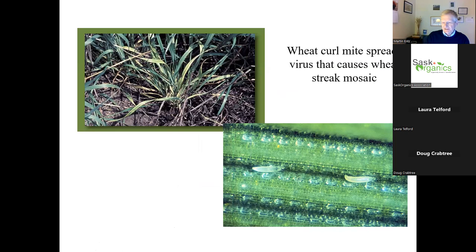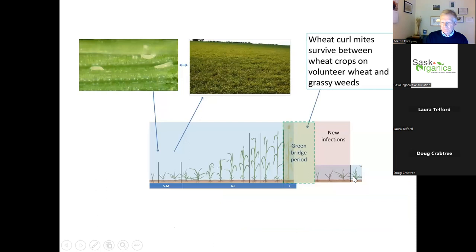Another rotation consideration is wheat streak mosaic virus. The virus is spread by the wheat curl mite. Many of you have heard of the green bridge - if we have a wheat crop affected by the curl mite and the virus, we want to avoid a green bridge. We want a period with no wheat growing before we plant a new crop. If we have spring wheat and want to plant winter wheat, we want to avoid this green bridge where the wheat curl mite survives. That's another example of crop rotation management to deal with pests.